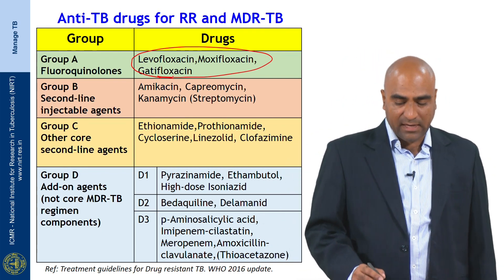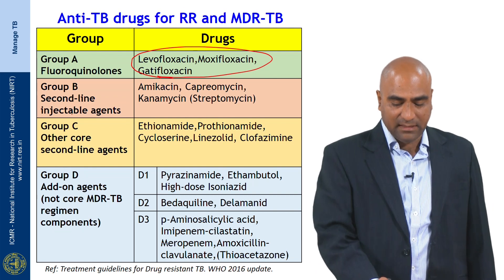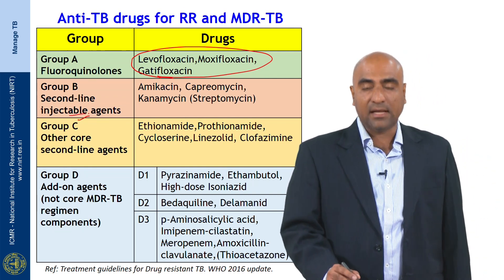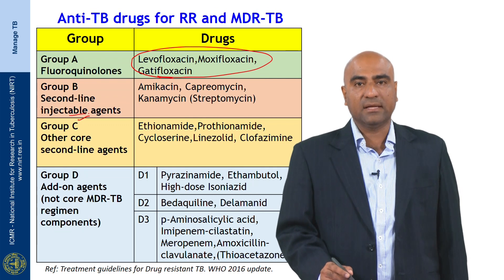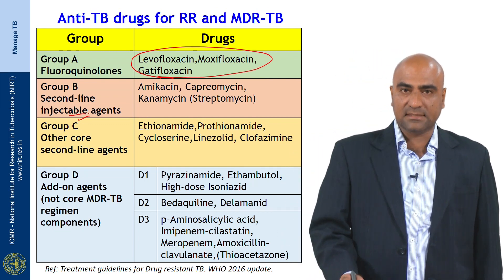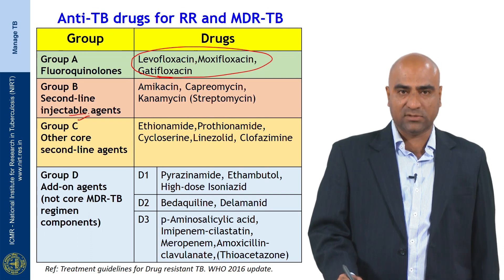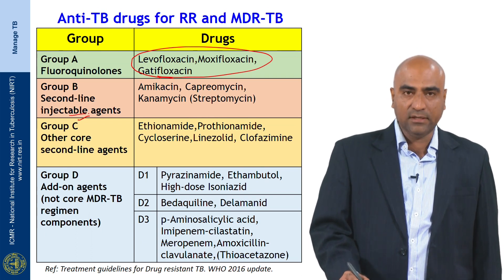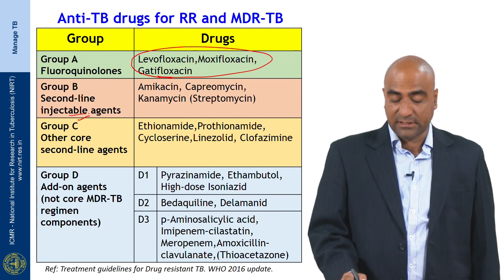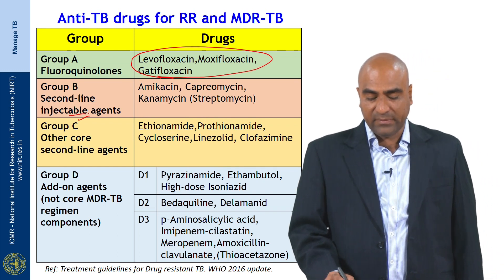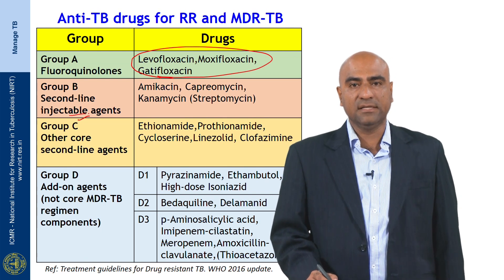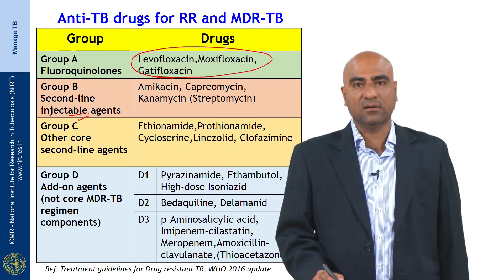In Group B are the injectable drugs: amikacin, capreomycin, and kanamycin. Streptomycin is used if it is sensitive. In Group C are other core second-line agents which include ethionamide, prothionamide, cycloserine, linezolid, and clofazimine.